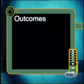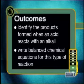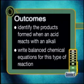We will need to make careful observations of our experiments and write balanced chemical equations for each of the reactions taking place. By the end of this lesson, you will be able to identify the products formed when an acid reacts with an alkali and write balanced chemical equations for this type of reaction.